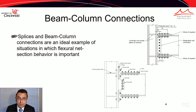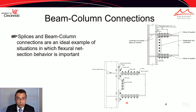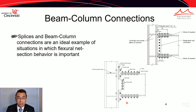Even more interestingly, the double T connection shown at the bottom of the slide is also from AISC 358. The difference is that its design procedure in that standard actually incorporates considerations that include the net section of the flanges and how to calculate and account for the presence of the holes. This is the only example in American practice where this is explicitly taken into account, but it's limited to special and intermediate moment frames for seismic applications.